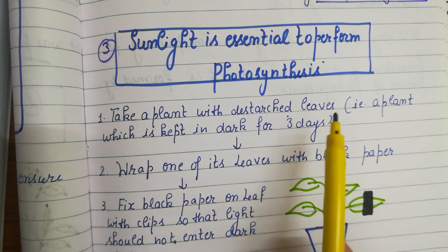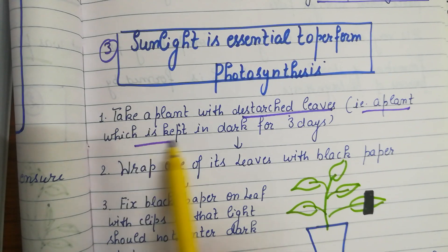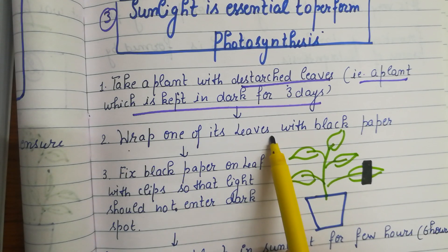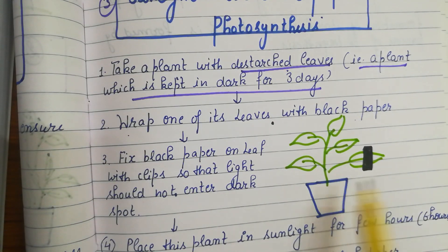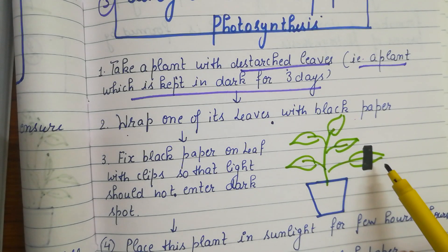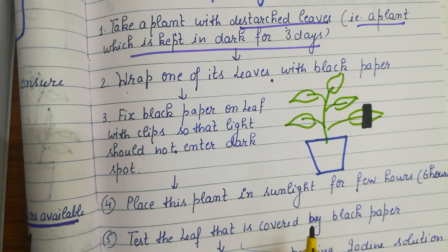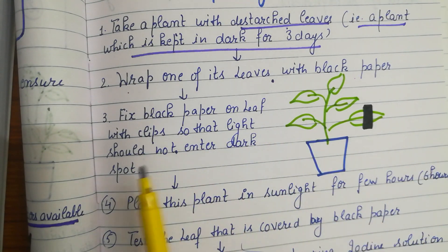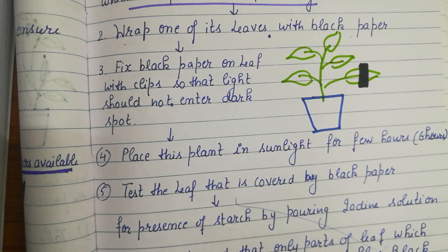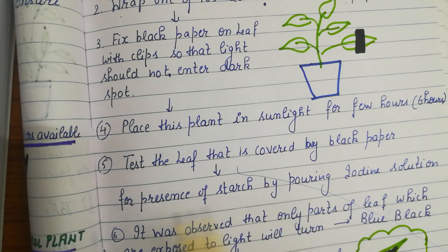Take a plant with de-starched leaves — kept in dark for three days to remove complete starch. Wrap one of its leaves with black paper. The plant's leaves are all green, but select one green leaf and cover it with dark black paper. Fix the black paper with clips so that light does not enter that dark spot at all. Place the plant in sunlight for approximately six hours.